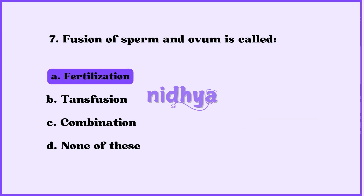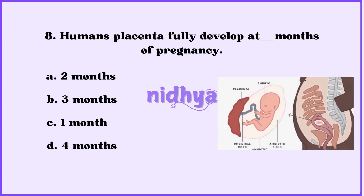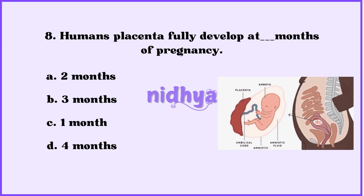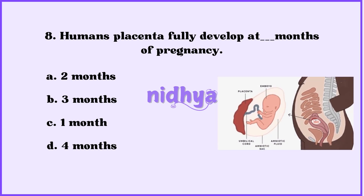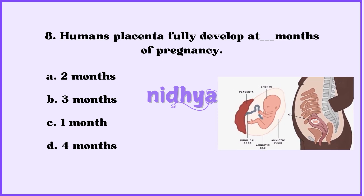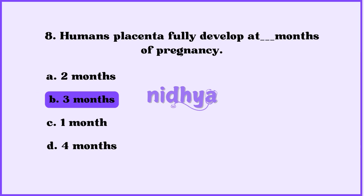Eighth question: Human placenta is fully developed at how many months of pregnancy — two months, three months, one month, or four months? The answer is three months.